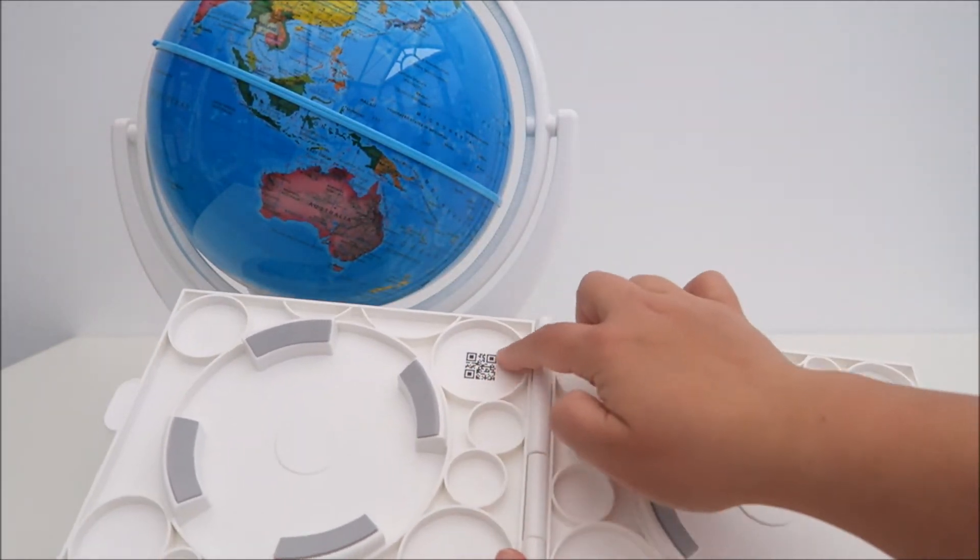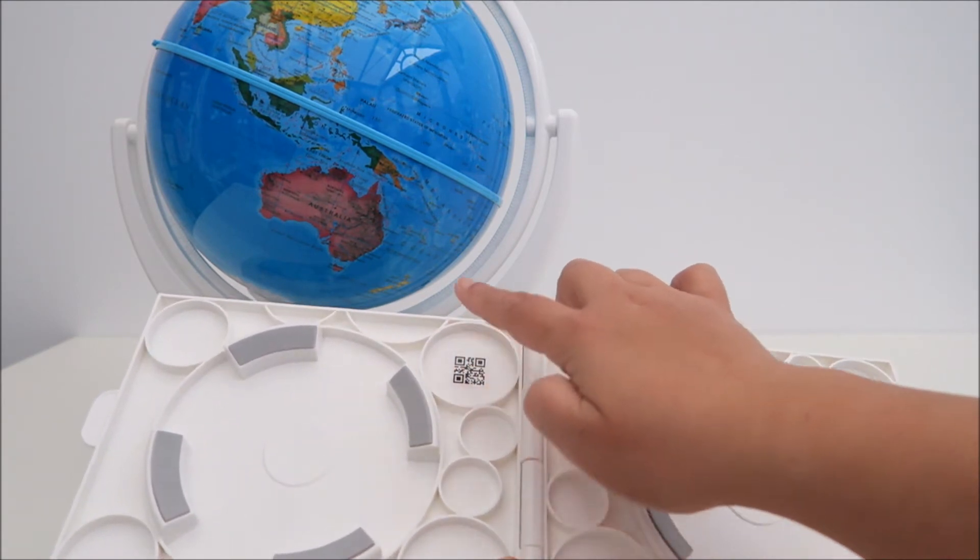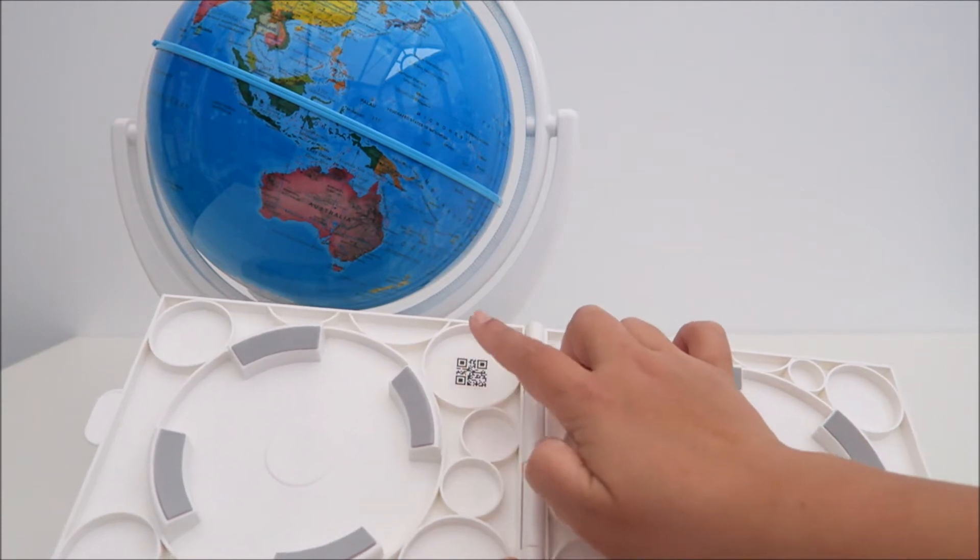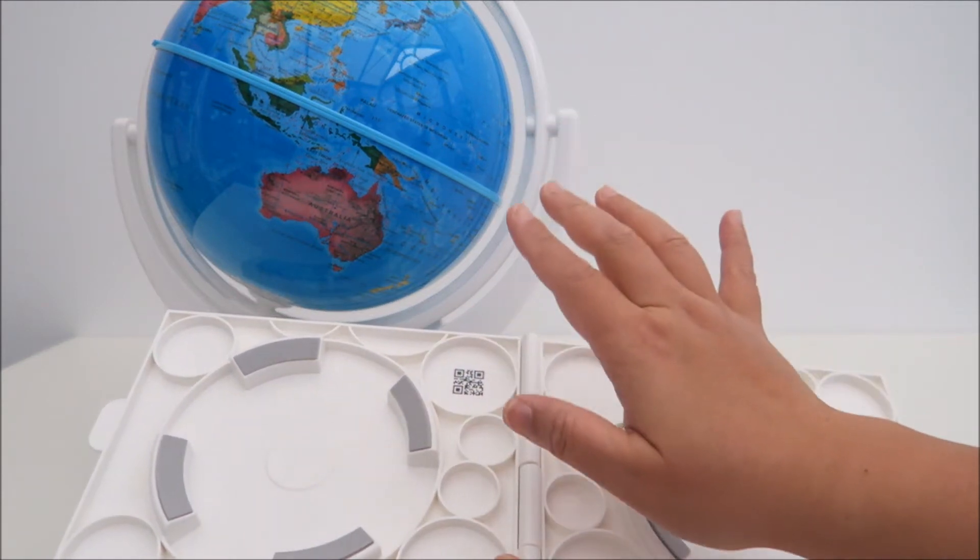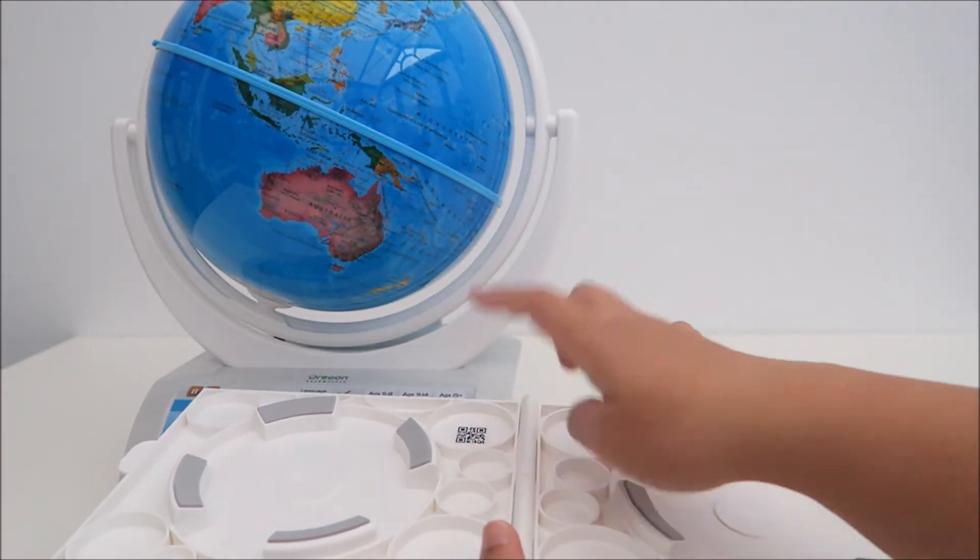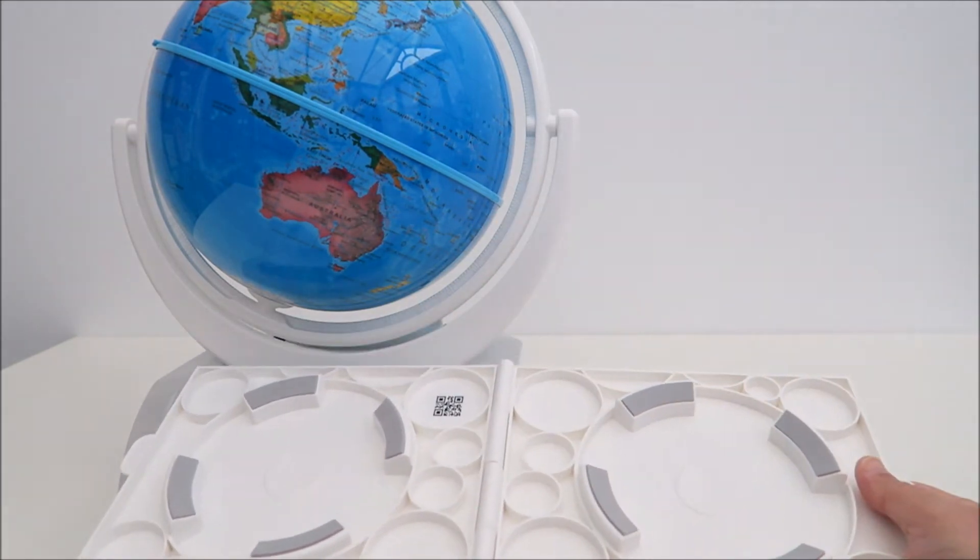But beforehand, just to let you know that this is the activation code. You can activate the apps on up to five smart devices. So remember, so when you download your free app, scan it and then it will register your smart globe.